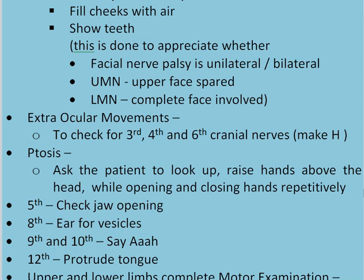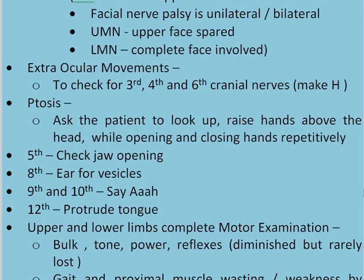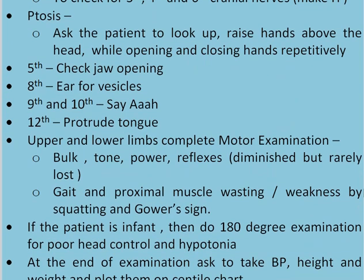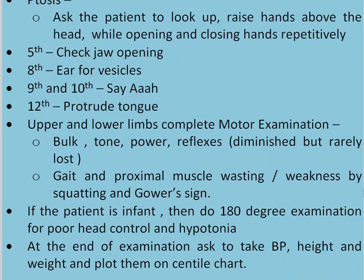The fifth nerve is checked by testing jaw opening. Check the ears for vesicles for the eighth nerve. For cranial nerves nine and ten, ask the patient to say 'ah' and check the movement of the uvula. For the twelfth nerve, ask the patient to protrude the tongue. Then check the upper and lower limbs with a complete motor examination: bulk, tone, power, and reflexes. In myasthenia, reflexes can be diminished but are rarely lost. Check the gait and proximal muscle wasting by making the child squat and performing the Gowers' sign.